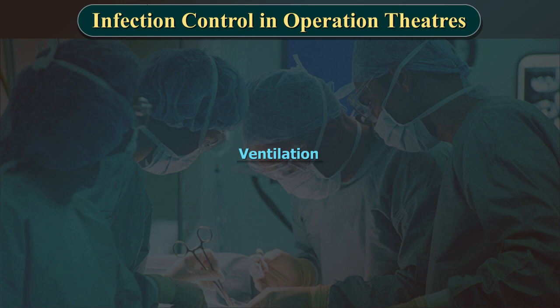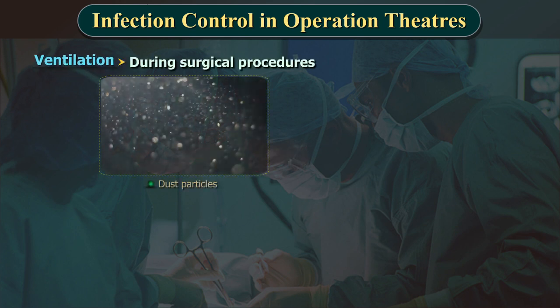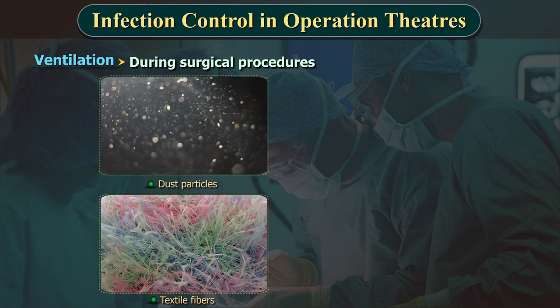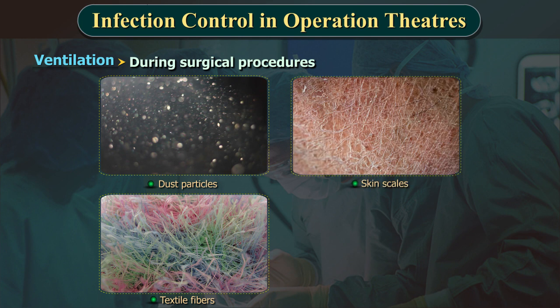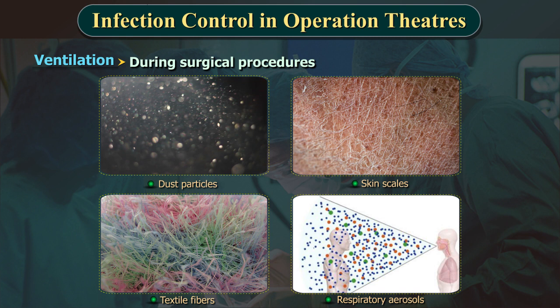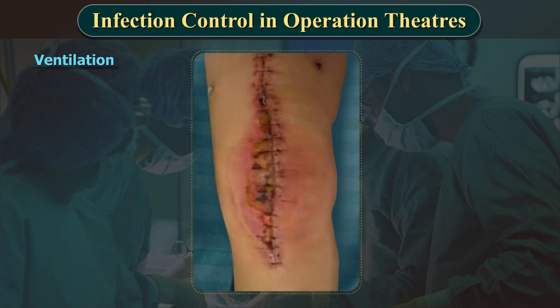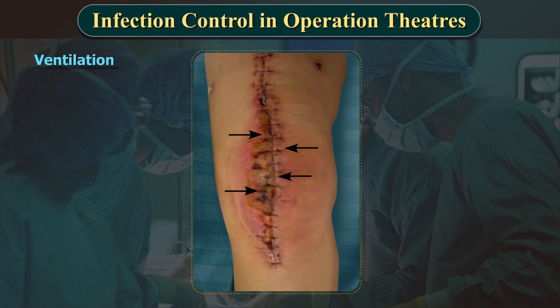During surgical procedures, dust particles, textile fibres, skin scales and respiratory aerosols loaded with viable microorganisms are released from the surgical team and the surroundings into the air of the operating theatre. Bacteria settling on surgical instruments or entering directly into the surgical site may result in surgical site infection. Therefore, maintaining a high quality of the air in the operating theatre is essential to controlling the risk of surgical infections.